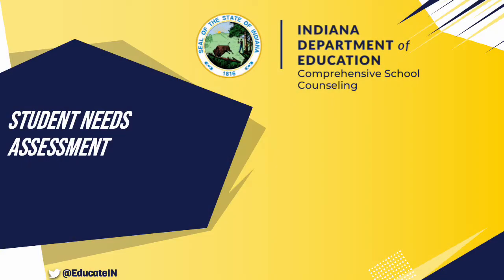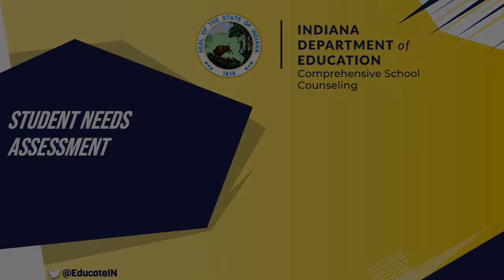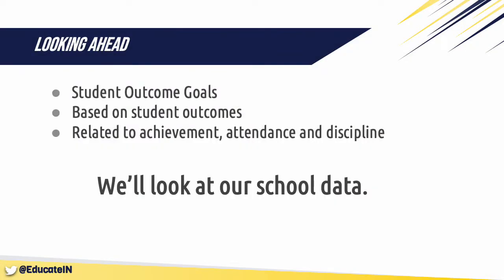Down the road, we will be looking at data to help you identify goals for your program. With the Carrying the Torch to Student Success model, goals for a comprehensive counseling program are based on student outcomes in each of the three school counseling domains: academic, college and career readiness, and student well-being. ASCA also asks that your outcome goals be related to achievement, attendance, and discipline. We will be looking at our school data to see how students are doing in these areas as we consider your goals.